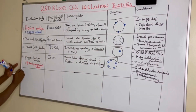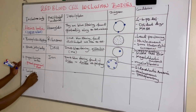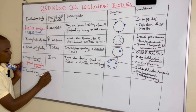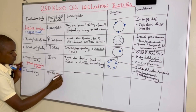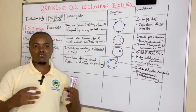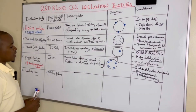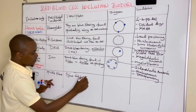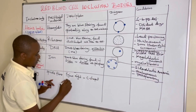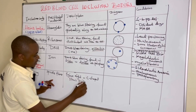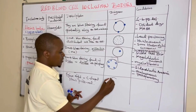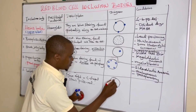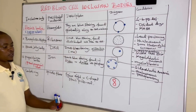We can also talk about Cabot rings. The precipitated material in Cabot rings comes from spindle fibers or microtubules, due to incomplete mitosis or cell division. These cells are figure-eight or C-shaped, and they stay in pink or pink-red within the cell.